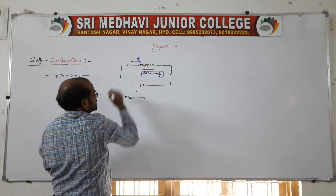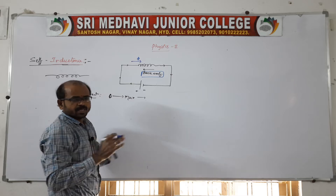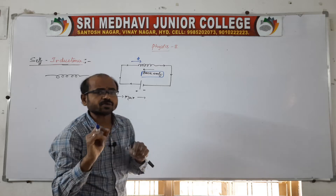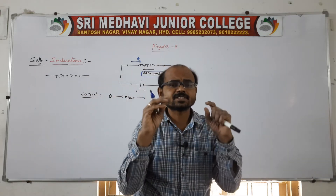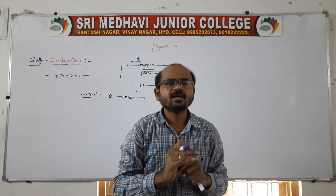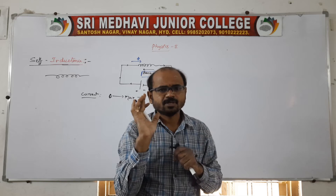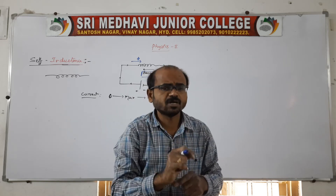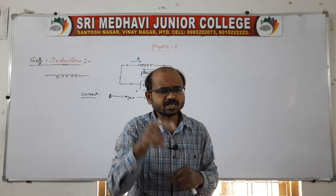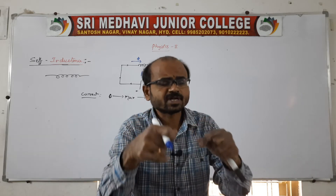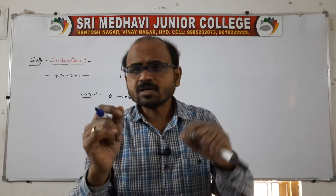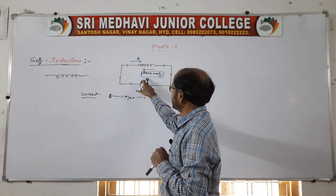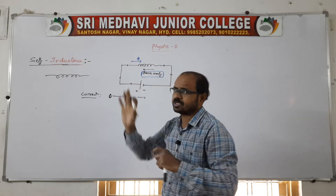Because the current is changing from zero to maximum, flux changes, that flux is linked with the coil and flows through the inductor — EMF is induced. That EMF is the back EMF, which opposes the changes. This process is called self induction. It happens in the same circuit — there is no other coil — and because of the change in flux, a back EMF is induced.